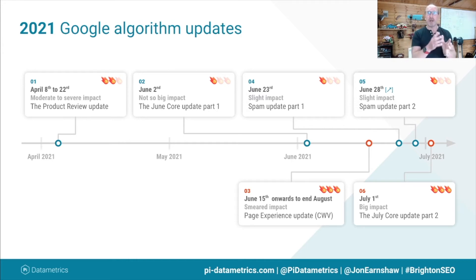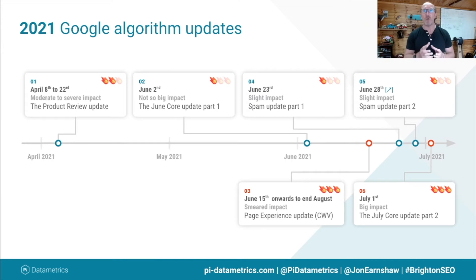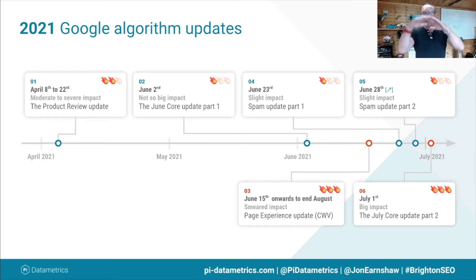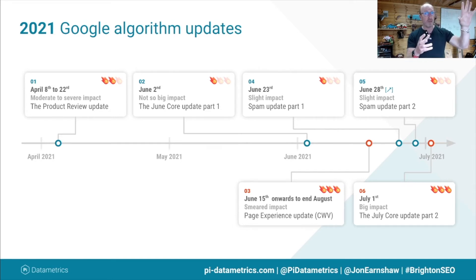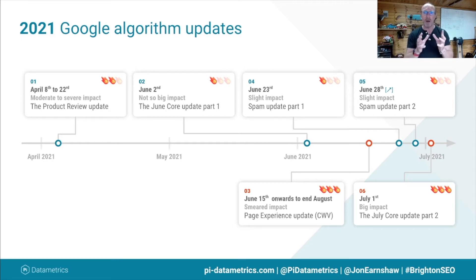Critically, that impact played out on page one — there weren't big changes within the SERP but there were subtle shifts from position one to three, from three to five, etc. Then the core update started: we saw the first core update on June the 2nd. It wasn't a great impact — lots of people did see it — but we reviewed millions of URLs and didn't see a huge amount compared with the July update that happened very recently, only this month.